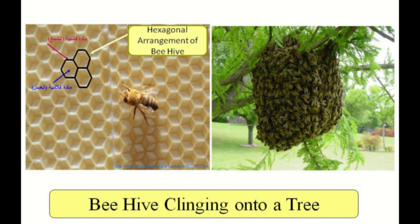If we do that, as you can see on the screen, we see on the right a beehive clinging to a tree. If we ponder upon it, we see that there are hundreds of bees buzzing and flapping their wings around the beehive, and yet the hive remains stable, strong, balanced, and doesn't crack or fracture. So we can conclude that this hive — the way Allah inspired the bees to build it — is strong, stiff, balanced, and low weight.